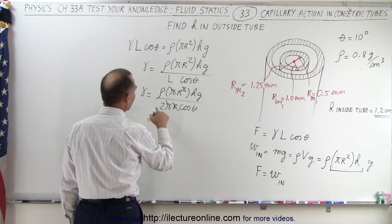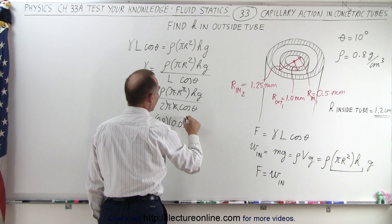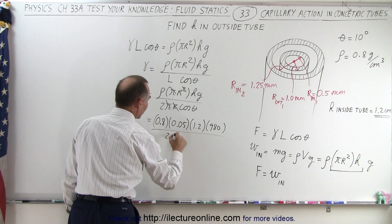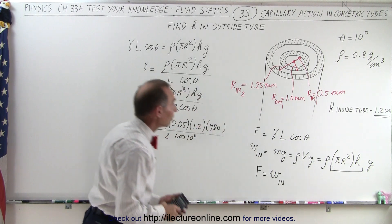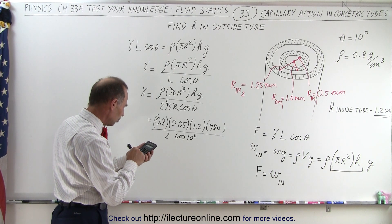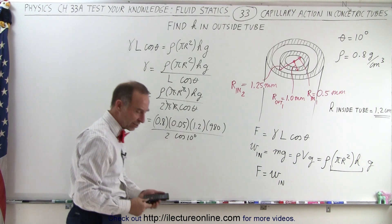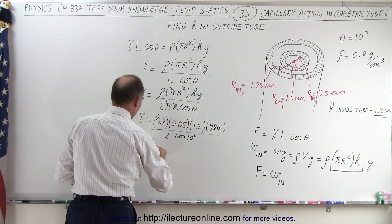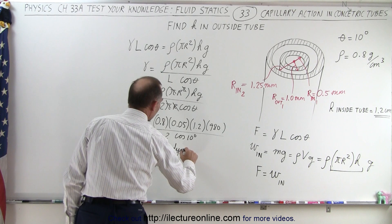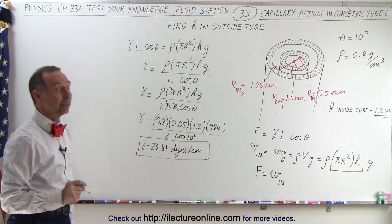Plugging in the numbers in CGS units: density 0.8, radius converted to centimeters is 0.05, height is 1.2 centimeters, g is 980, all divided by 2 times cosine of 10 degrees. Computing: 0.8 times 0.05 times 0.05 times 1.2 times 980, divided by 2, divided by cosine of 10 degrees, gives a surface tension of 23.88 dynes per centimeter for the unknown liquid.